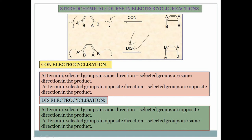First, you have to select the groups at the terminal carbons. Suppose group A is on the left side and group B is on the right side — and A is on the same side on both ends. In con-mode electrocyclization, if both terminal groups are on the same side, the product will also have those groups on the same side. So both groups same side → product same side. This is very important: select the groups first and determine whether they are same side or opposite side.